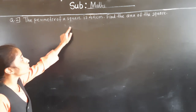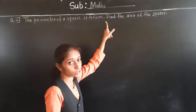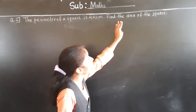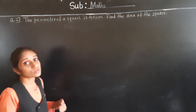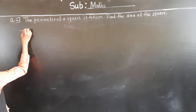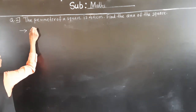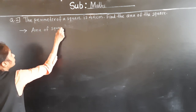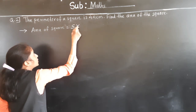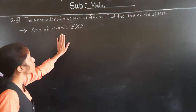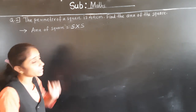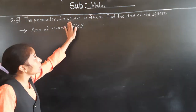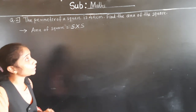Question number 2. The perimeter of a square is 44 centimeters. What is given? Perimeter of the square is given. And what is asked? Find the area of the square.